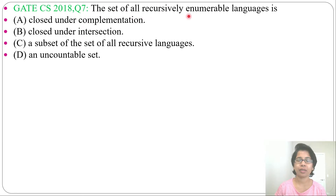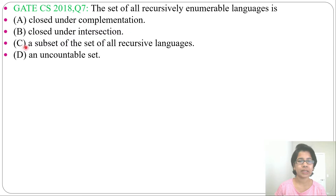The set of all recursive enumerable languages — four options are given. Option A: closed under complementation. Option B: closed under intersection. Option C: a subset of the set of all recursive languages. Option D: an uncountable set. This question is directly from closure property.